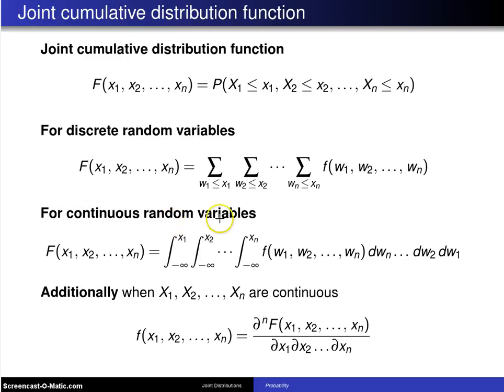For continuous random variables, these summations are replaced by integrals, and the integration limits run from negative infinity up to x1, negative infinity up to x2, of the joint probability density function, dwn, dw2, dw1. So there it is for continuous random variables.